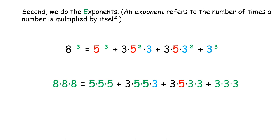Second, we do the exponents. An exponent refers to the number of times a number is multiplied by itself. Eight cubed or eight to the power of three is eight times eight times eight. Five cubed is five times five times five. Five squared is five times five. Three squared is three times three. Three cubed is three times three times three.